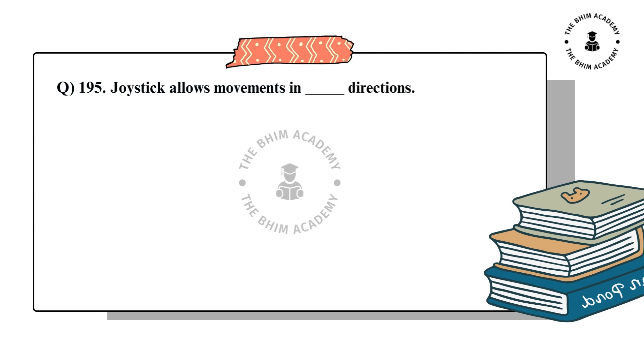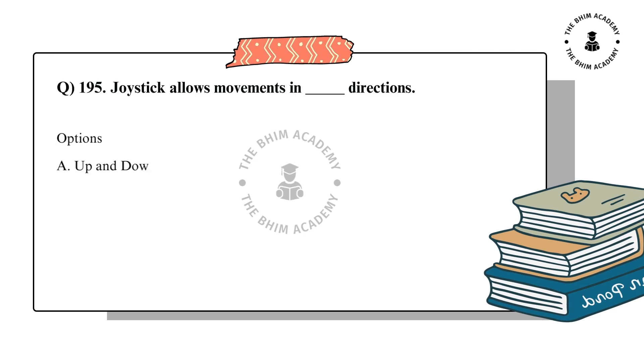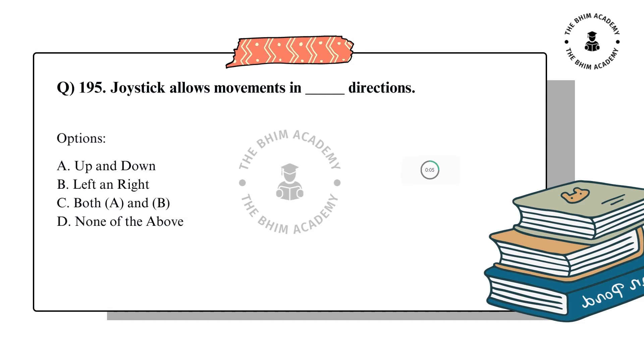Question number 195. Joystick allows movements in dash directions. The correct answer is C. Both A and B.